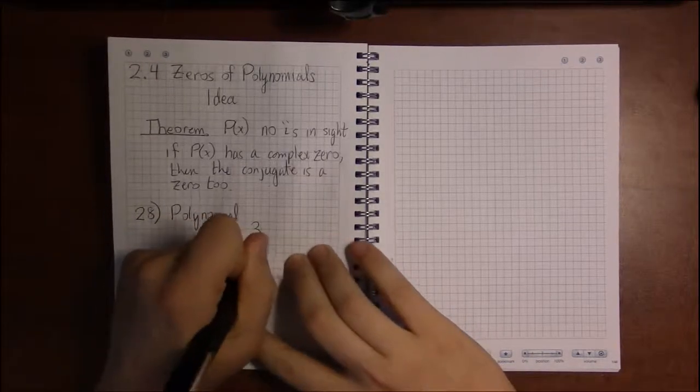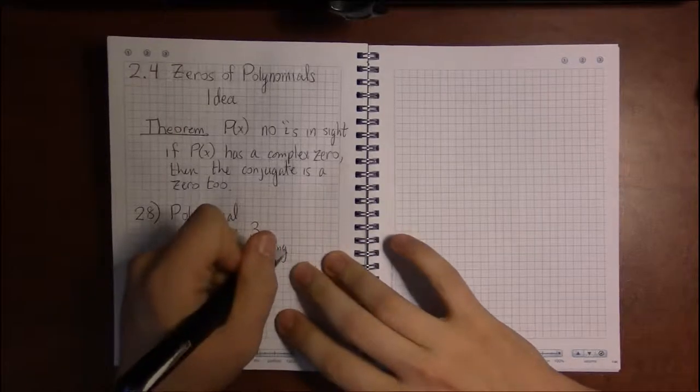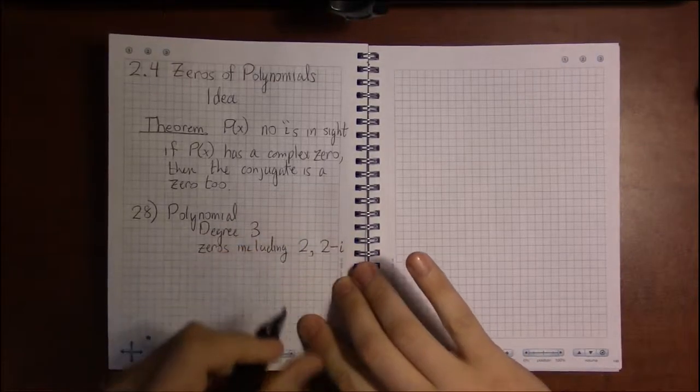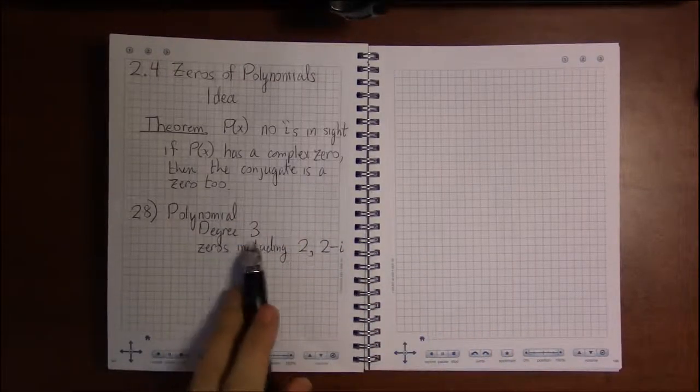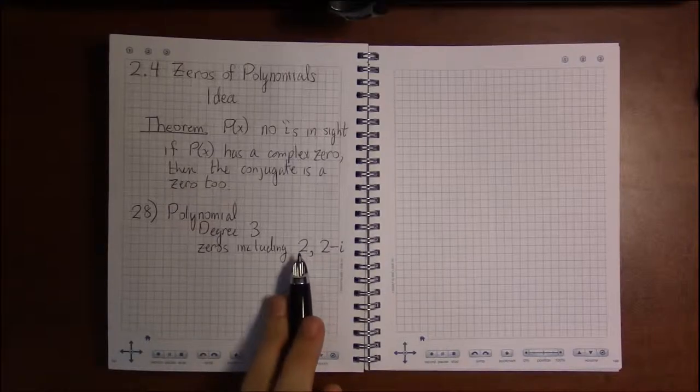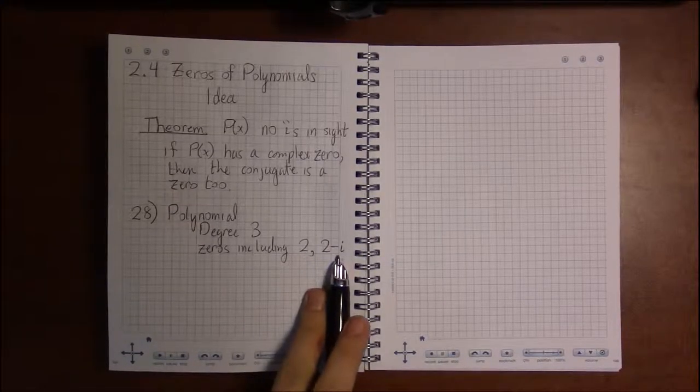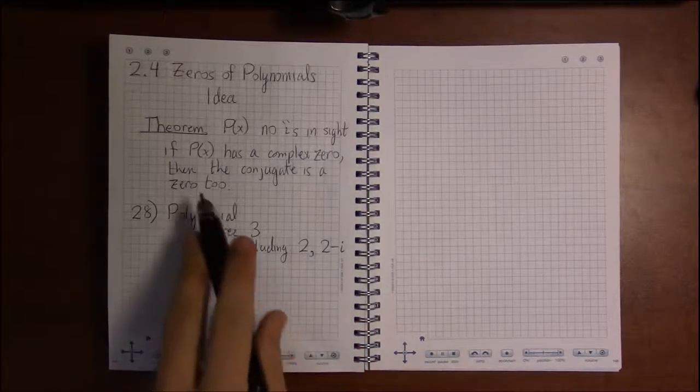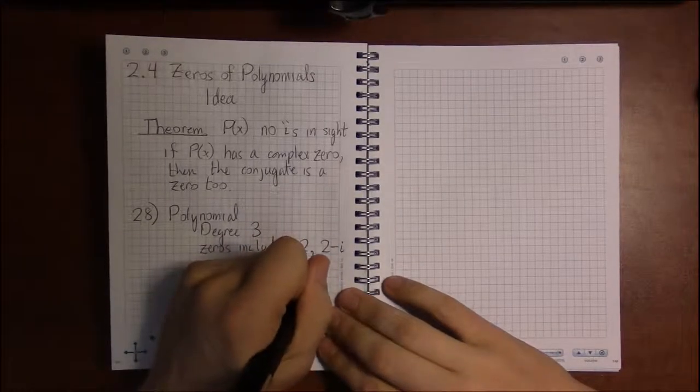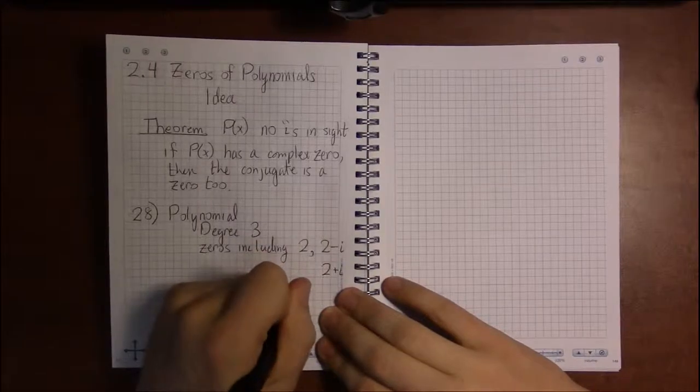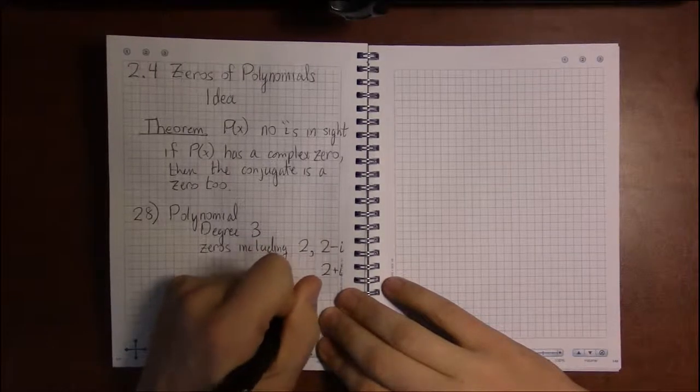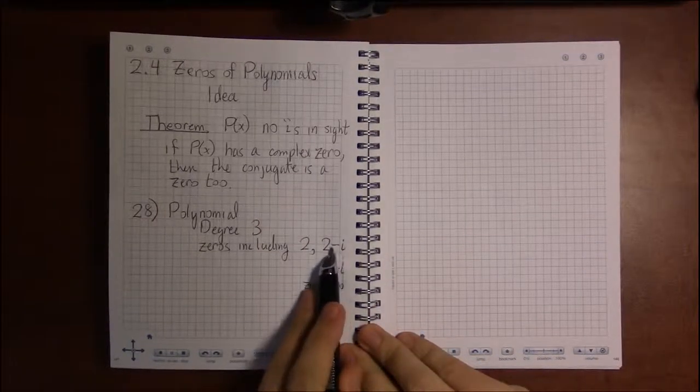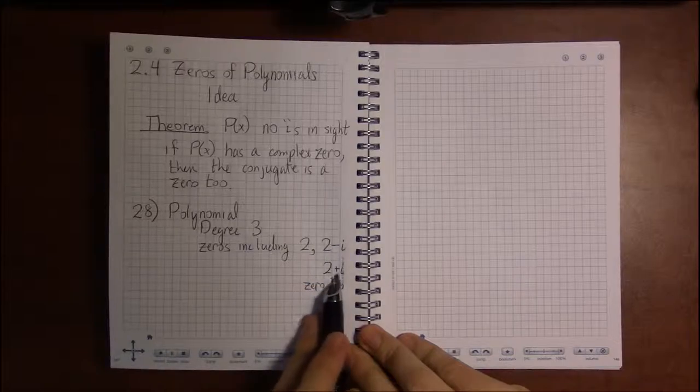It must have degree 3, and among the zeros we must see that 2 and 2-i appear. So degree 3, we have to have 2 as a zero and 2-i as a zero. Well, if 2-i is a zero, then according to this conjugate pair theorem, it must be that 2+i is a zero too, because 2+i is the conjugate of 2-i. All I did was switch the sign on the i.